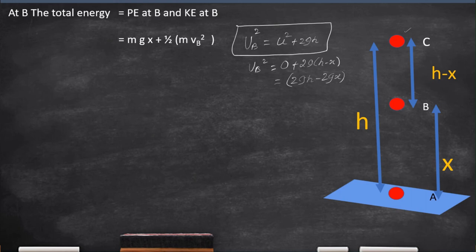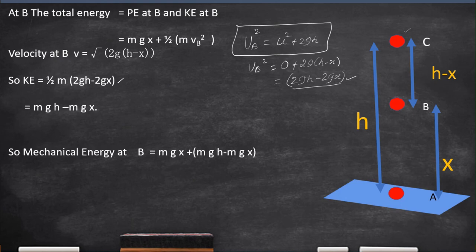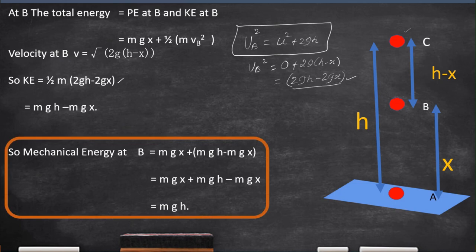Now, with the help of this vB², we can calculate the kinetic energy. The kinetic energy becomes ½M into V². V² is nothing but this. Therefore, we have replaced here. When we open the brackets, it becomes Mgh - Mgx. And then, mechanical energy, that is, the sum of potential and kinetic energies is equal to Mgx plus kinetic energy Mgh - Mgx, which is giving us the value Mgh again.